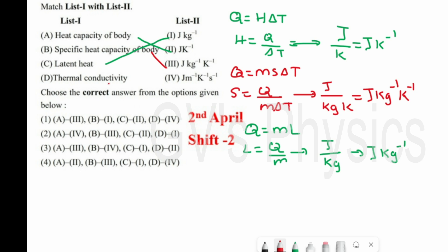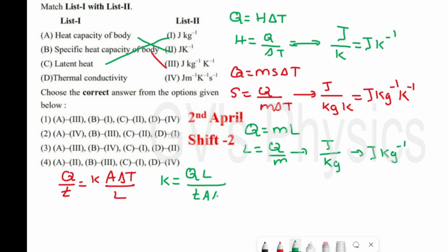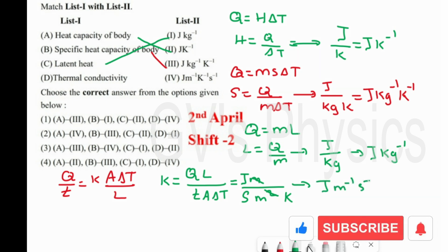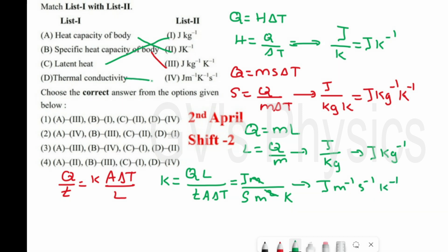Last one is thermal conductivity. Using k = QL/(t·A·ΔT), substituting units: Joule × meter / (second × meter² × Kelvin). The meter terms cancel, giving J·m⁻¹·s⁻¹·K⁻¹. D matches with 4. Option 4 is the right answer.